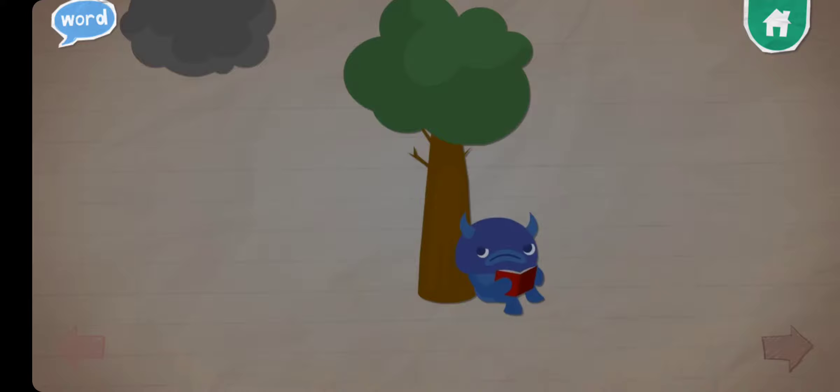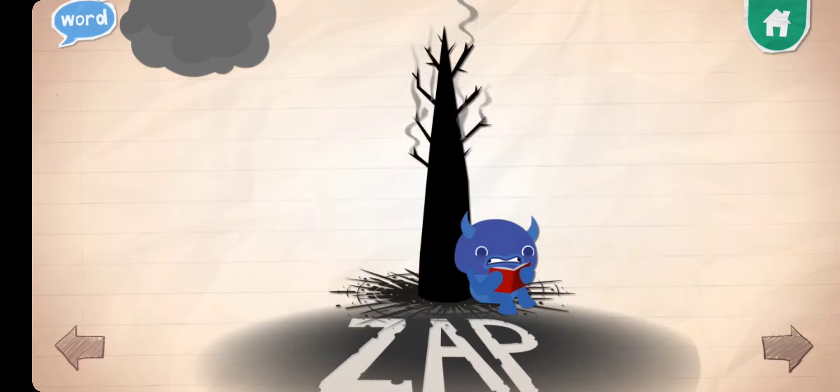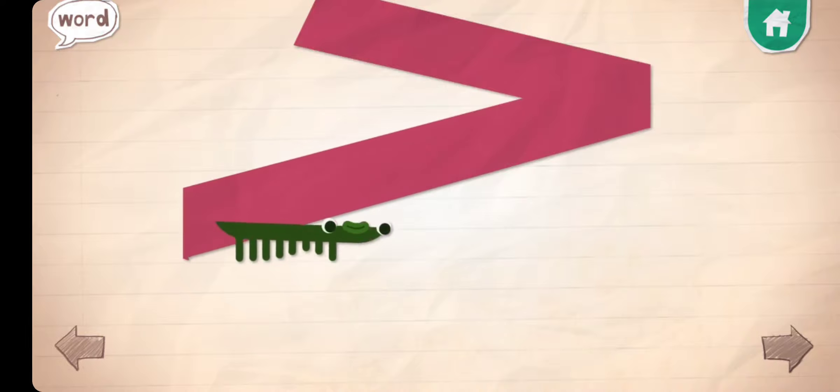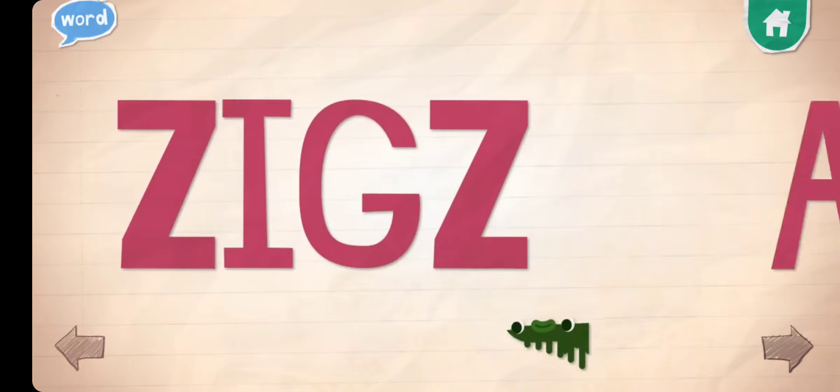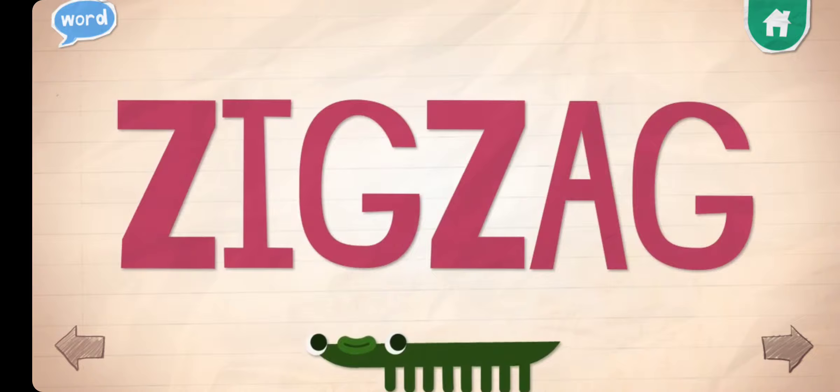To zap something is to strike it quickly, usually with a jolt of electricity. A zigzag is a line that goes back and forth.